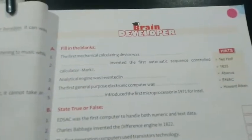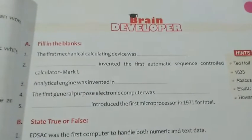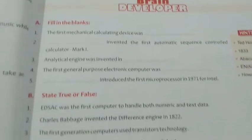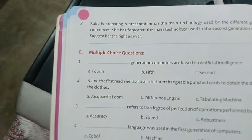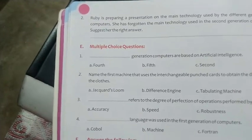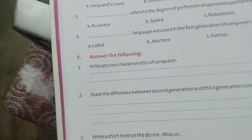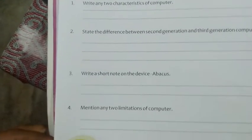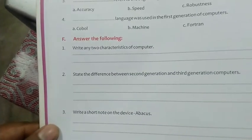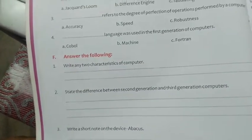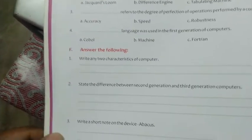We come to the end of the chapter. Here we have brain developer objective-type questions like fill in the blanks, true and false, match the following, and application-based questions. Dear students, make sure you write all these in your copies — when school reopens, we will check them. There are also multiple-choice questions and four answer-the-following questions to be written in your computer copy. If you have any doubts, please write them in the comment section. Thank you.